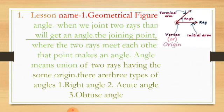Angle means two rays having the same origin. There are three types of angles.